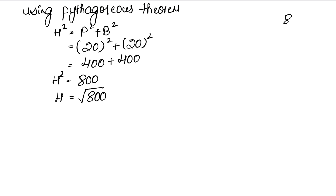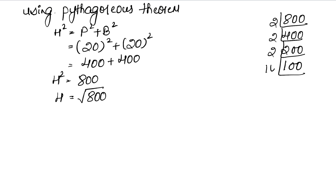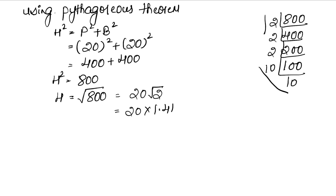So h = √800. Finding √800 by prime factorization: 800 = 2 × 400 = 4 × 200 = 8 × 100. This gives √800 = 20√2. Using √2 = 1.41, we get h = 20 × 1.41 = 28.20 cm. So the hypotenuse is 28.20 cm.